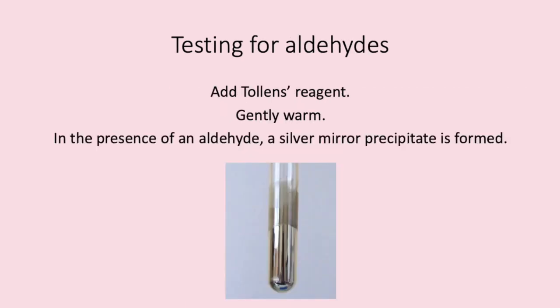While that test is a positive for both aldehydes and ketones, sometimes you will be asked to differentiate between an aldehyde and a ketone. We use Tollens reagent. We add this to a solution and gently warm. If an aldehyde is present, a silver mirror precipitate forms. If a ketone is present, there will be no reaction.